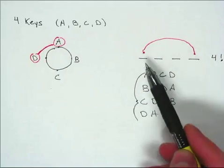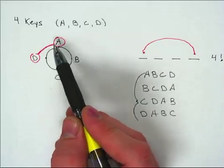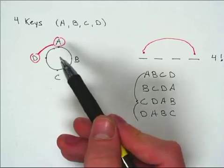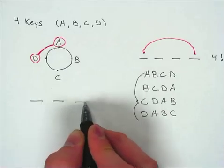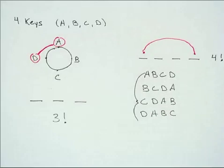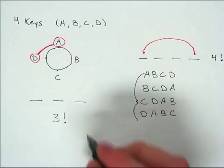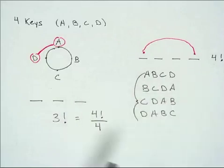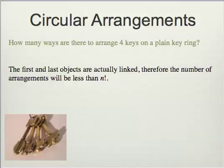Thinking of a and d as linked means really there are only three different things to arrange: the link between a and d, key b, and key c — so three factorial arrangements. As a formula: you have four factorial, and since four of those arrangements are the same, that equals four factorial divided by four, which equals three factorial, which is six. In general, the number of arrangements of n objects in a circle is n factorial divided by n, or equivalently n minus one factorial. That covers linear, circular, and repeated object arrangements. We will follow up with another video on permutations and combinations.